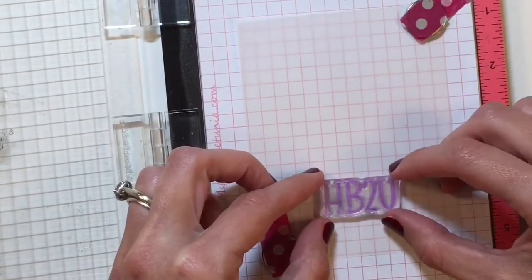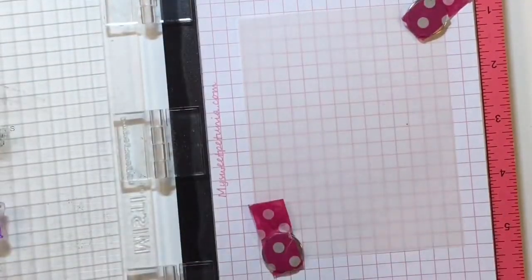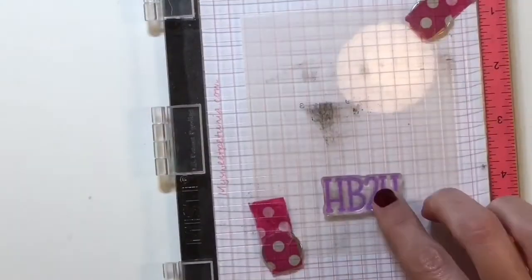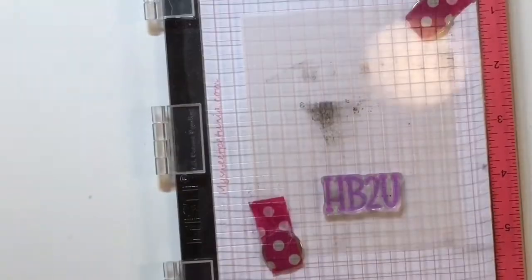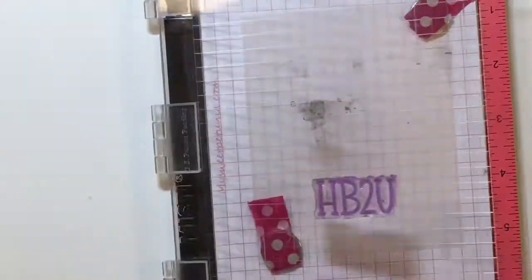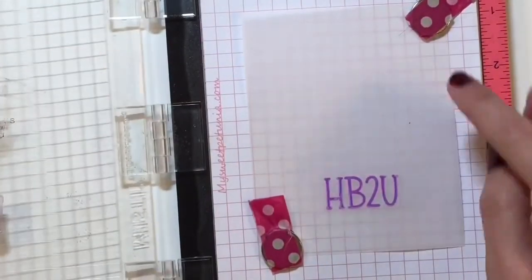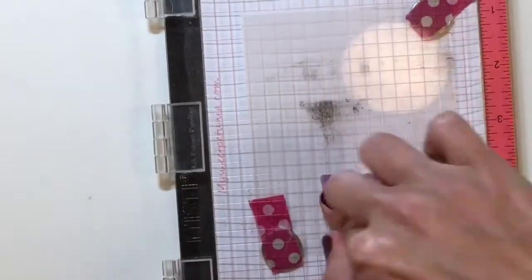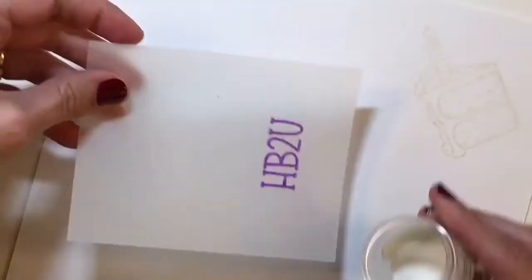I'm going to stamp now with the HB2U, so happy birthday to you. That's from the birthday sentiment stamp set from sweet stamp shop. I'm using the wilted violet to stamp that. I'm going to do that a few times because vellum is a real slippery paper, so you have to be careful not to press too hard, or it'll just kind of push the ink out. I'm just very easily going over the top and layering that color on there.